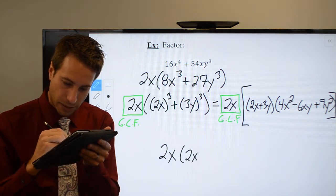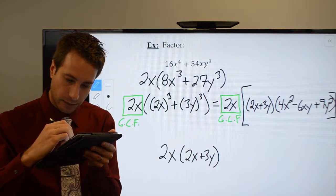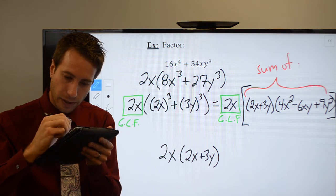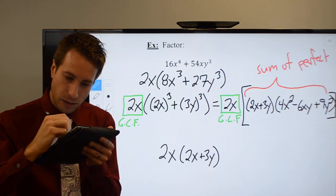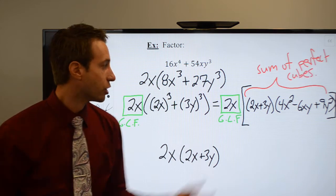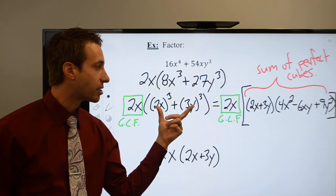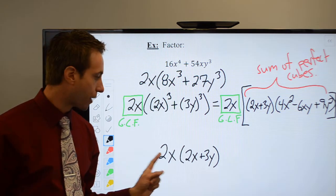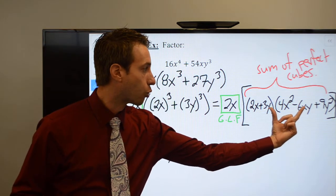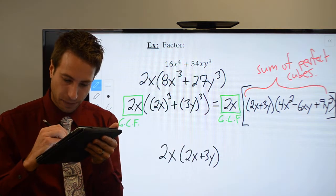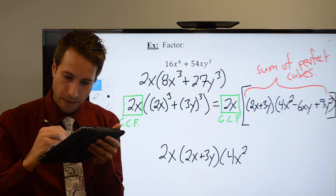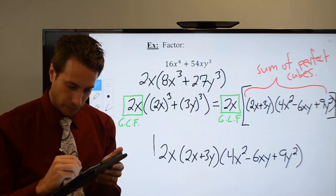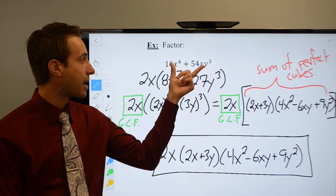So my GCF is 2x, and the sum of perfect cubes factors to (2x + 3y)(4x² - 6xy + 9y²). Don't lose the GCF — writing out all the factors gives us 2x times (2x + 3y) times (4x² - 6xy + 9y²). There you go — you've successfully factored that polynomial.